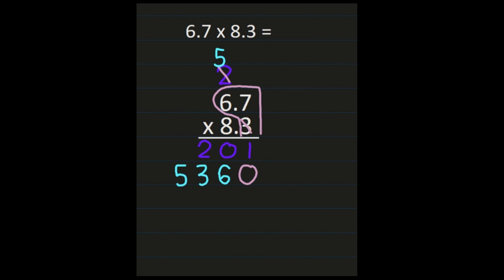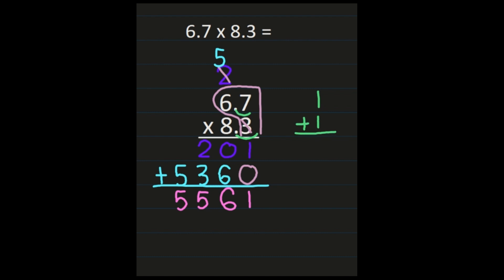Then we'll be ready to add, just like we did when multiplying with whole numbers. 1 plus 0 is 1, 0 plus 6 is 6, 2 plus 3 is 5, and 5 plus 0 is 5. Now I need to place my decimal point. I count how many places are behind the decimal in my two factors: 1 in 6 and 7 tenths, and 1 in 8 and 3 tenths, so 2 digits total. I'll move the decimal in my answer 2 places to the left. My final answer, my product, is 55 and 61 hundredths.